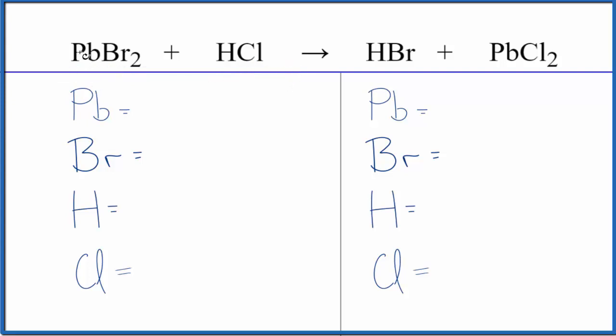Let's start with the type of reaction for PbBr2 plus HCl. We can see that the lead and the hydrogen are switching places.